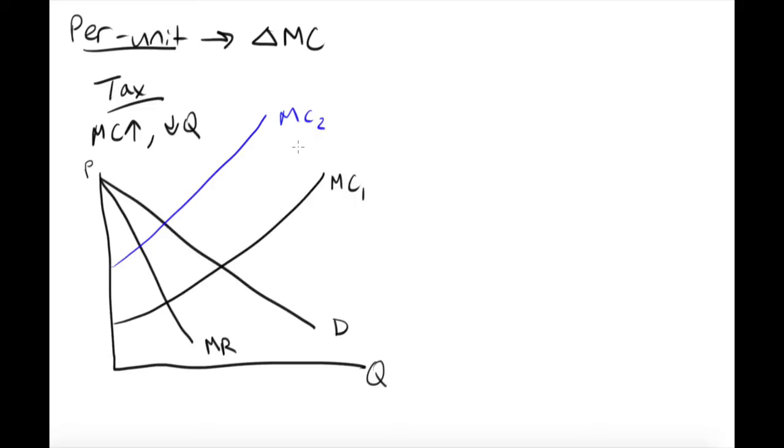And what we want to look at is this is a situation of a monopolist. So they're going to be setting marginal revenue equal to marginal cost. So the original monopolist price was here. However, the new one is here.